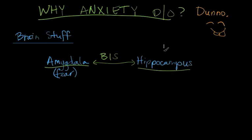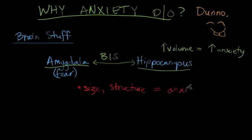What they noticed was that people who had a larger volume of hippocampus matter actually had more anxiety. So somehow the amygdala and the hippocampus together based on their size, perhaps their structure, equals whether you have anxiety or not.